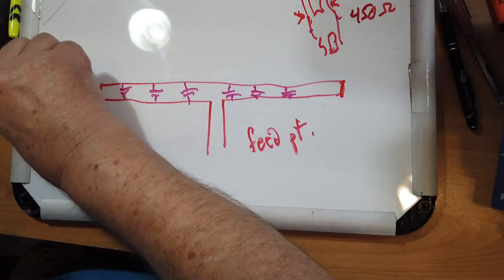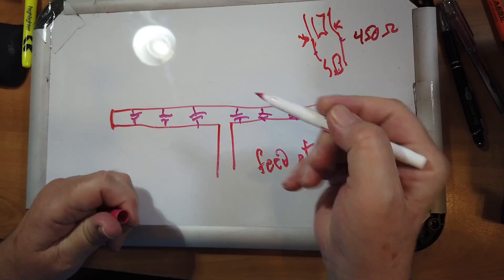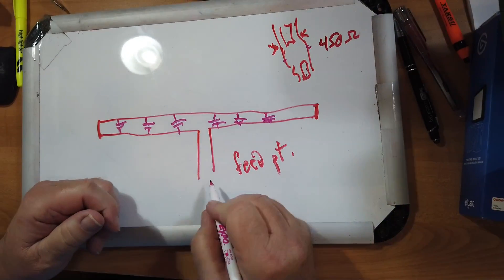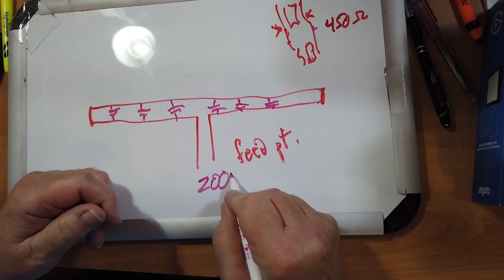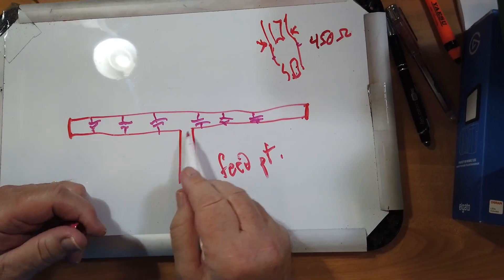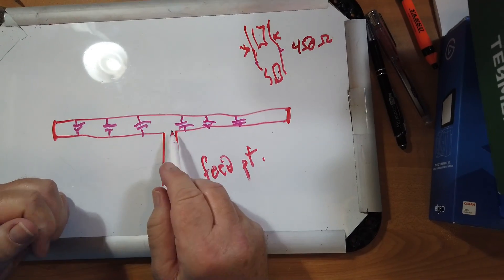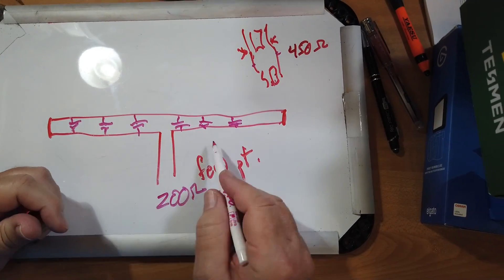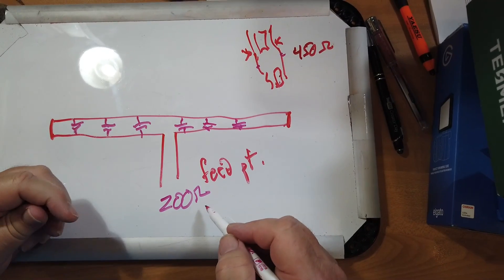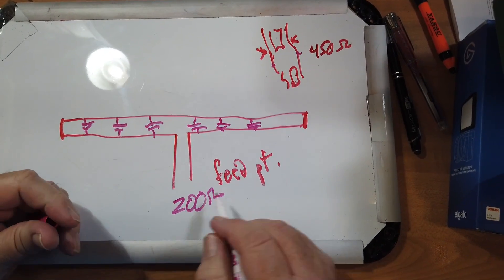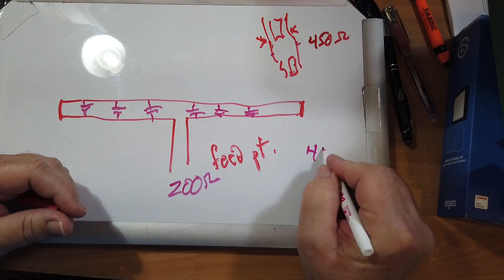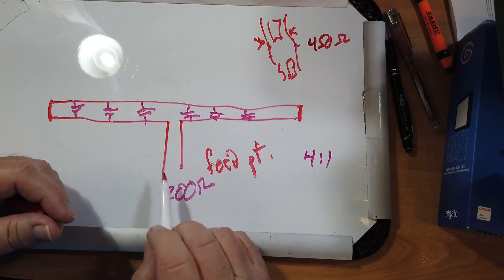So, this feed point impedance right here is four times 50, which is 200 ohms. So, you can feed this with ladder line. You wouldn't feed it straight with coax, because that's a 50 to 200 ohm mismatch. You're looking at a four-to-one SWR if you feed it.